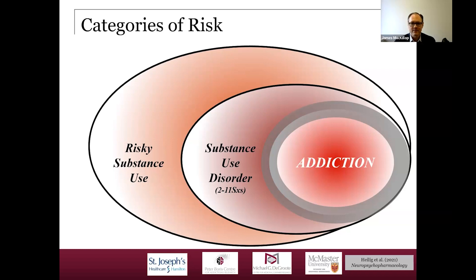Although DSM-5 does not use the term 'addiction' — considering it potentially stigmatizing — we generally think of addiction as being at the higher severity end of the spectrum, typically severe or possibly moderate to severe substance use disorder. What we're talking about now is cannabis use disorder specifically, which encompasses addiction to cannabis as well as potentially lower severity manifestations.